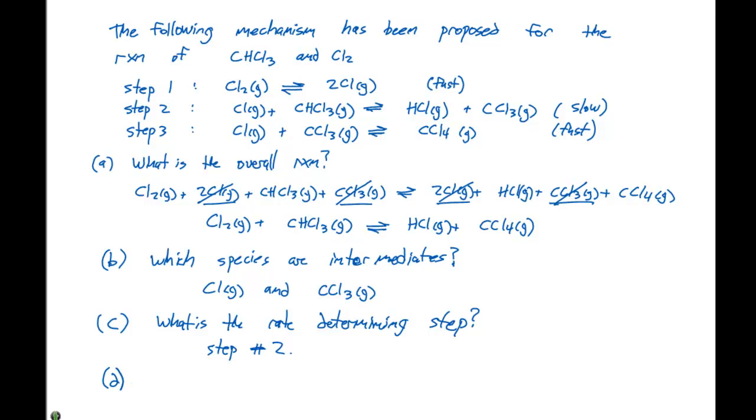And lastly, I'm going to ask what is the predicted rate law. Remember, we need to determine the rate law from the rate determining step. So we can say that rate is going to be equal to K times the concentration of Cl times the concentration of CHCl3. So we can write this as our rate law.